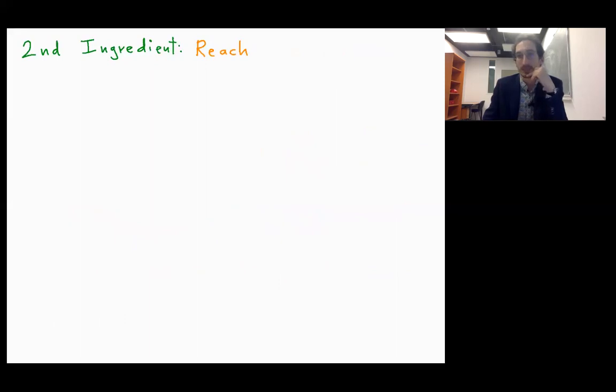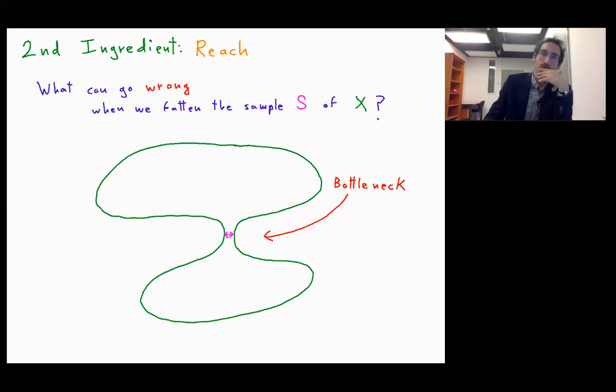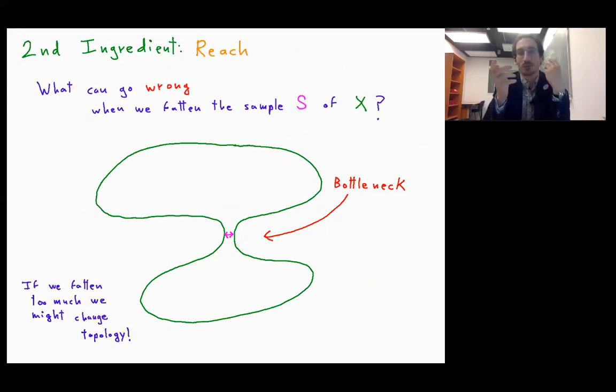So the second ingredient is the reach. So what can go wrong when we fatten the sample S of X? So we have a bottleneck. Something can go wrong, of course, because if we fatten too much the points, I might lose this bottleneck.